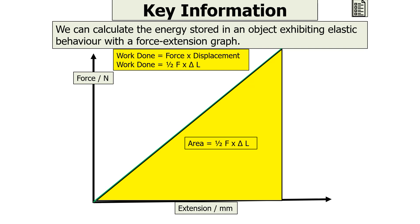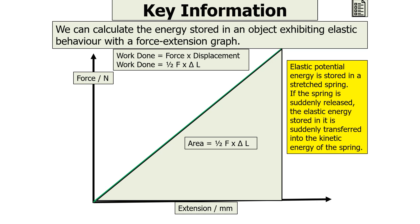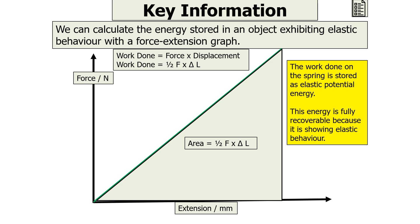In this particular example, the elastic potential energy store is the one being stored in that stretched spring. This tells us that if the spring is suddenly released, the elastic energy stored in it is then transferred into the kinetic energy of the spring. Alternatively, the work done on the spring is stored as elastic potential energy. This energy is fully recoverable in this situation because the object is exhibiting elastic behaviour.